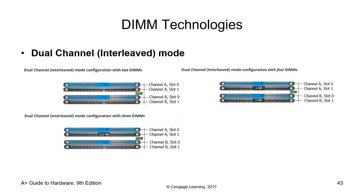Dual-channel interleaved mode provides the highest performance. It is activated whenever the total capacity of the built-in modules is identical in both channels — for example, Channel A and Channel B each have 1 GB. This requirement can be met with 2, 3, or 4 DIMMs. Requirements for dual-channel interleaved mode: arrangement of DIMMs in both memory channels, identical total capacity in all memory channels, and mirror-inverted assembly on memory slots.